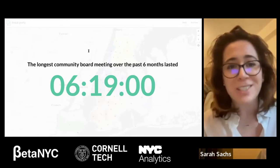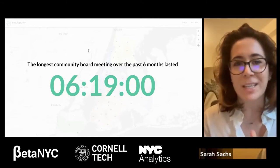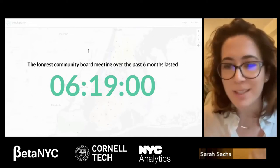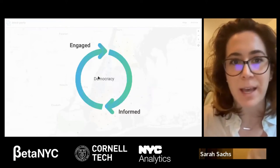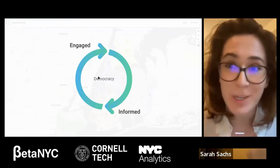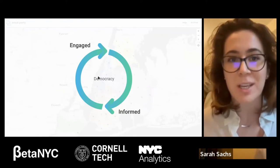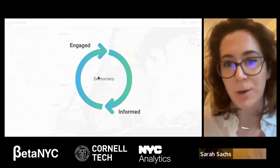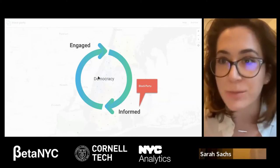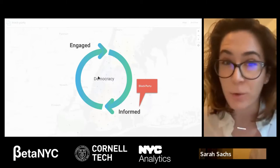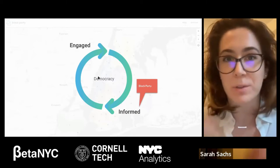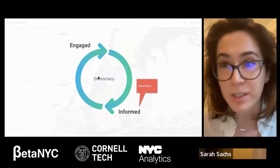The longest community board meeting from the last six months was six hours, 19 minutes, and 13 seconds long. This was from Brooklyn Community Board 1 — a combined public hearing and board meeting about the Williamsburg River Ring proposal that was eventually approved for rezoning. We talk about these different statistics to emphasize that these meetings are not necessarily accessible. Democracy is not a spectator sport, and in order to become engaged in local representation, we must become informed.